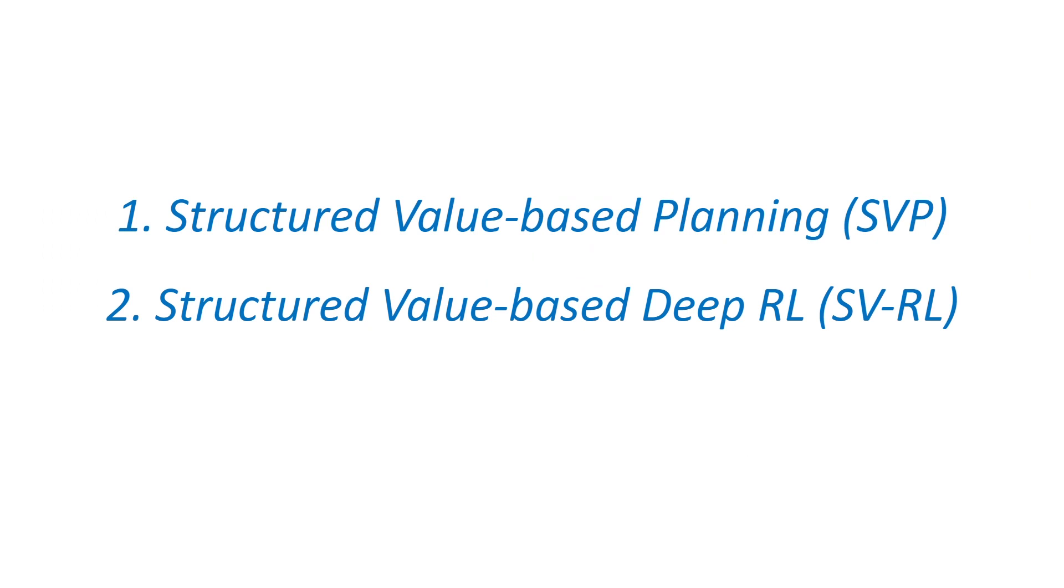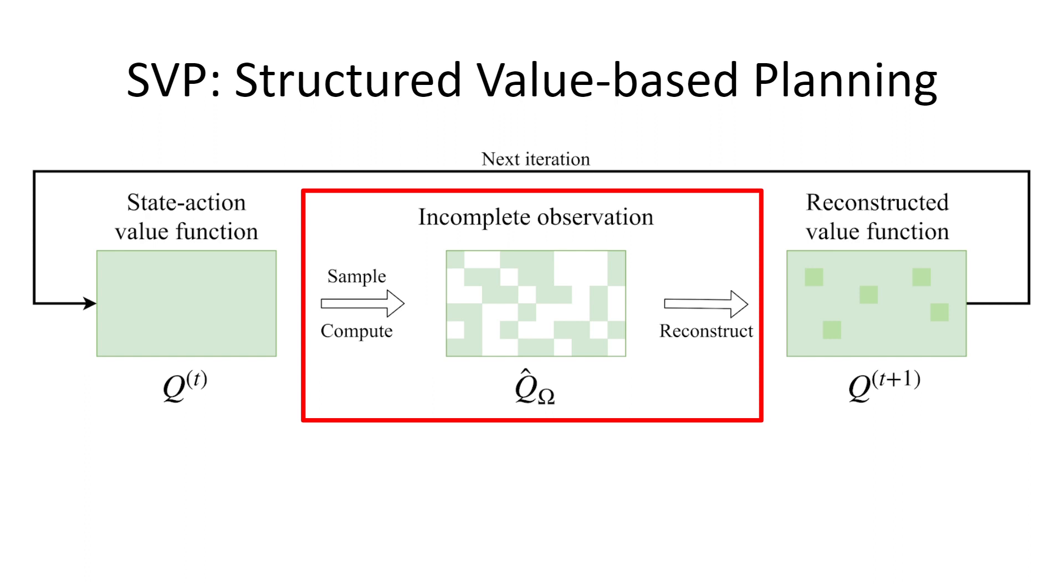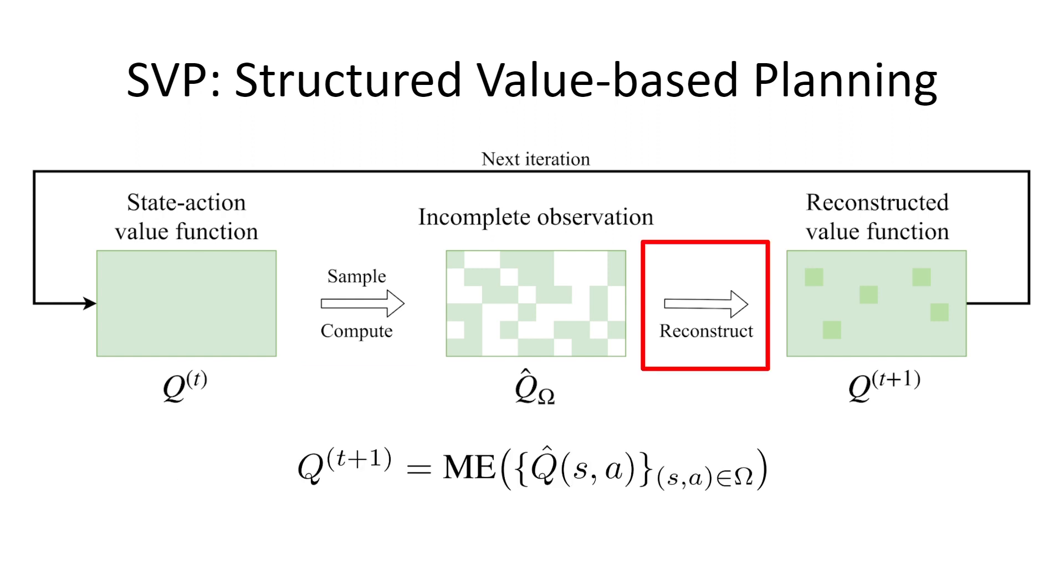In the subsequent presentation, we formalize the previous intuitions and approaches by proposing two structure-based methods. We first present the structured value-based planning for planning and stochastic control tasks. Next, we naturally extend the idea to deep reinforcement learning and propose structured value-based deep RL. Let's get started with SVP. In planning, the foundation of SVP is the Q-value iteration, but with an additional component added. At each iteration, instead of the entire Q matrix, SVP samples a set of positions and carry out the iteration. In particular, each position is sampled with a probability P, independent of each other. This procedure produces an intermediate incomplete matrix, as shown in the middle. With the incomplete observations, SVP can now use matrix estimation techniques to fill in the remaining entries. This finally produces the entire Q matrix for the next iteration.